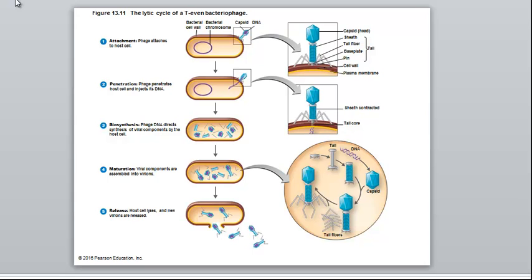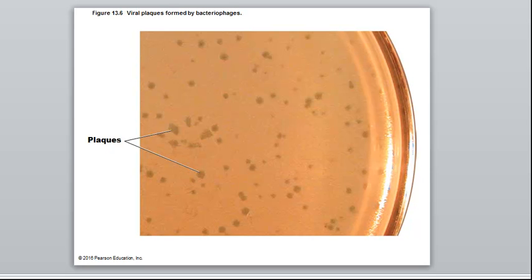From start to finish, we call this a burst time. The burst time for most phages is one to three hours, generally a few hours. This can actually be monitored on the surface of a plate. When you do this, you seed the plate with a bacterial lawn.